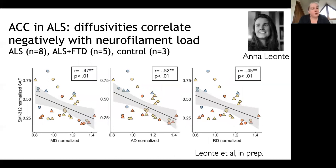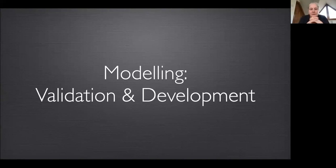He was also able to show correlations between the retardance measures from polarized light imaging and diffusion-based parameters from the MR data — consistent with what we see from myelin immunohistochemistry stains that we'd more commonly use to validate against MRI. In another study, we asked a very similar question about comorbid pathology in ALS related to frontotemporal dementia, looking at the anterior commissure and finding correlations between a neurofilament marker and several MR-derived diffusivities.